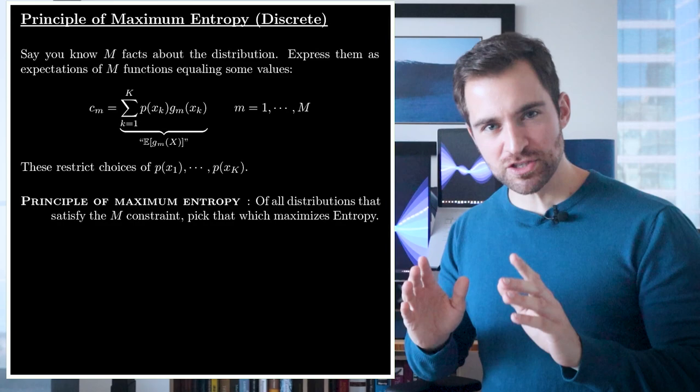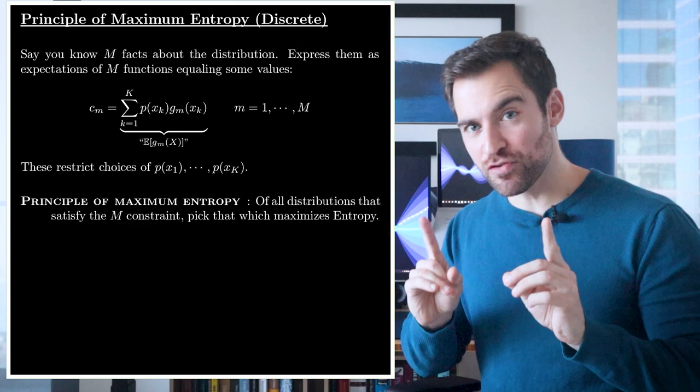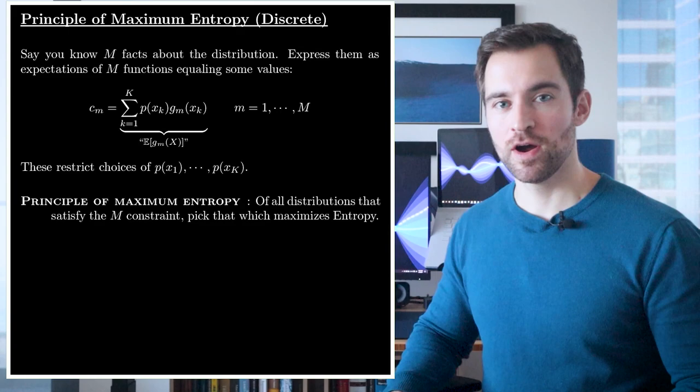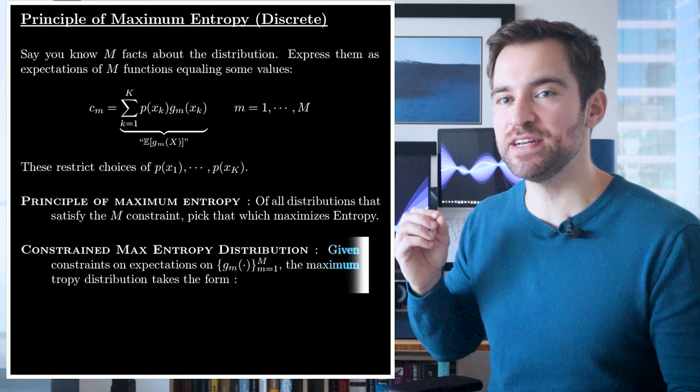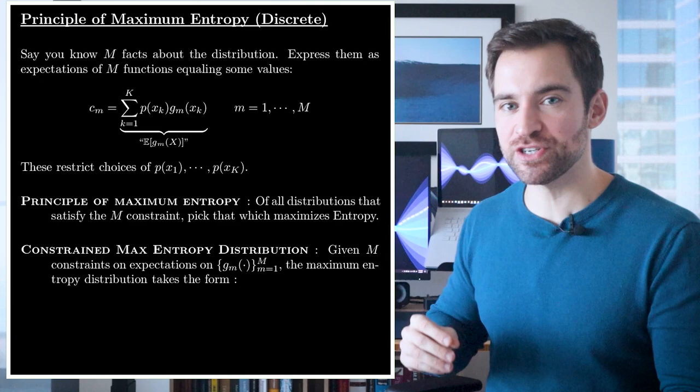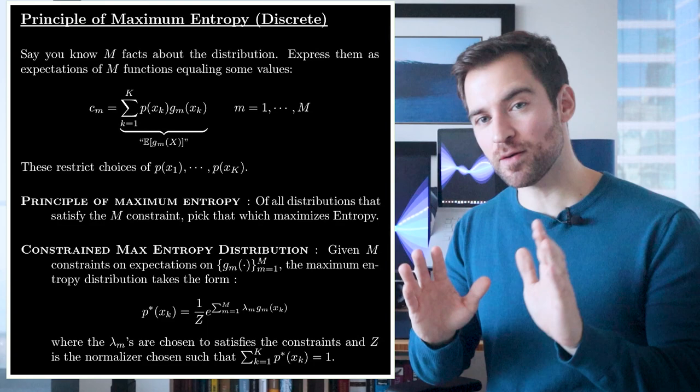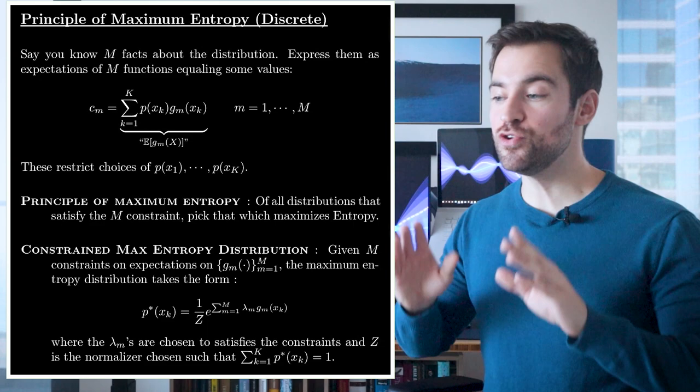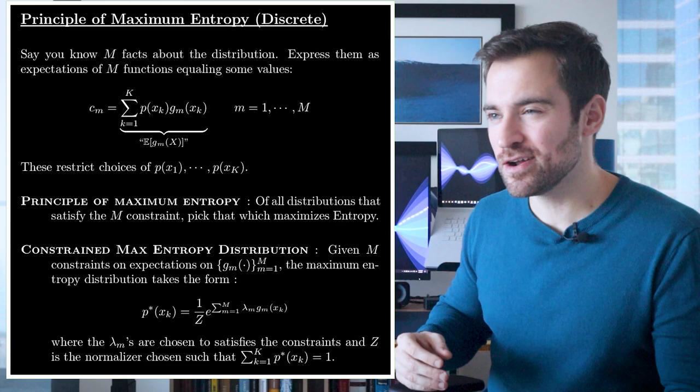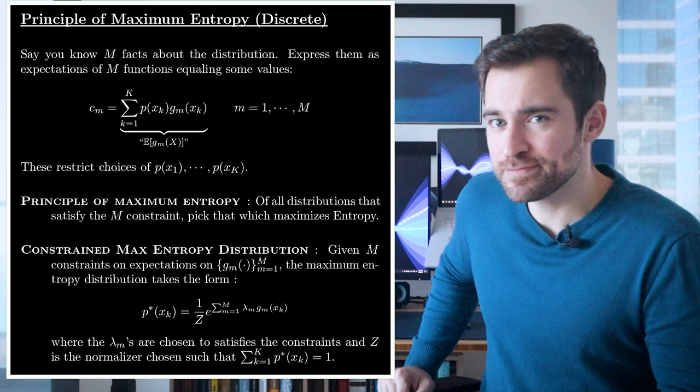How do we actually find this distribution? Fortunately, some extremely intelligent people figured out an absolutely life-saving fact. They gave us a theorem that tells us how to find the constrained maximum entropy distribution. If you have your M facts ready, then the max entropy distribution is given with this expression, where the lambdas are chosen to meet your equations, and Z is a normalizer determined by those lambdas to ensure the distribution sums to 1. The moment you solve for the lambdas that match your information, you know that is the maximum entropy distribution.